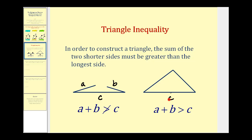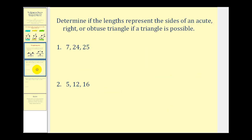Okay, let's look at our examples. We want to determine if the lengths represent the sides of an acute, right, or obtuse triangle, if a triangle is possible. Let's start by labeling the longest side c; the two shorter sides would be a and b. Notice that 7 plus 24 is greater than 25, so we can form a triangle.